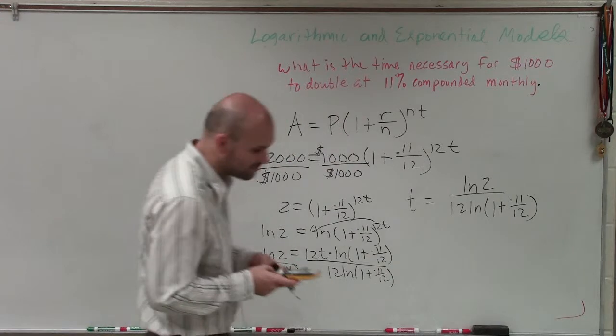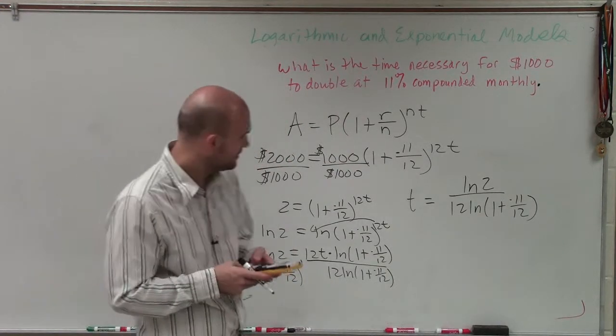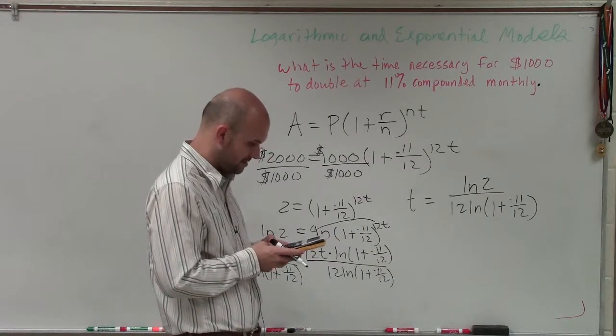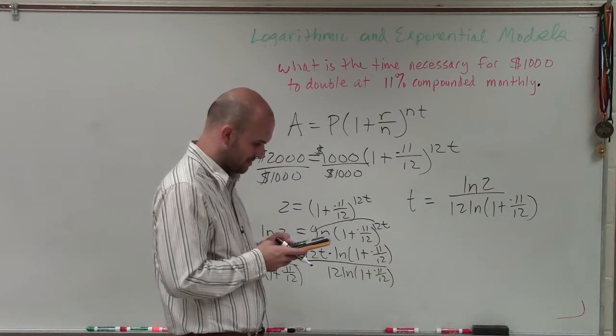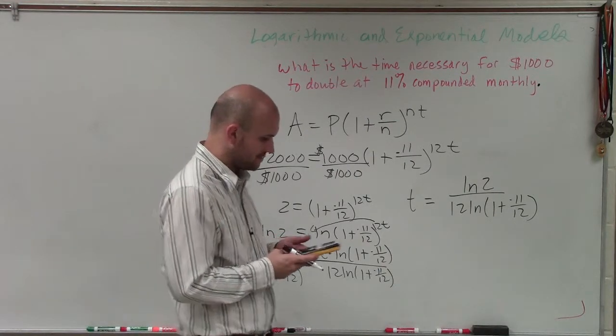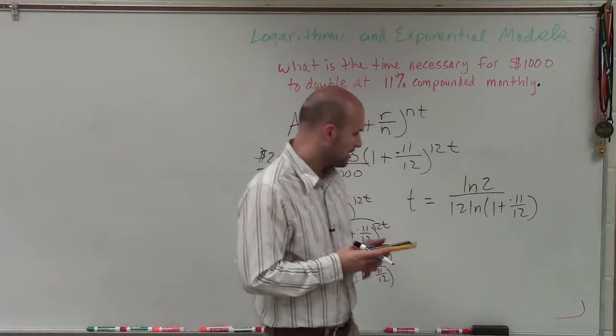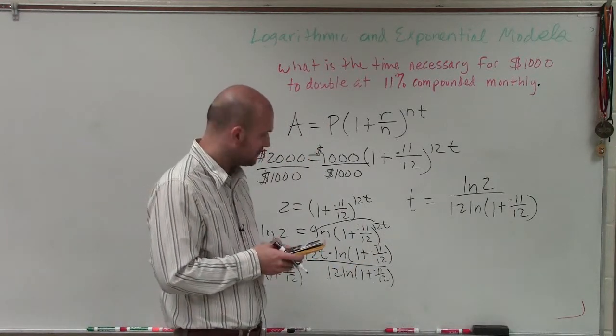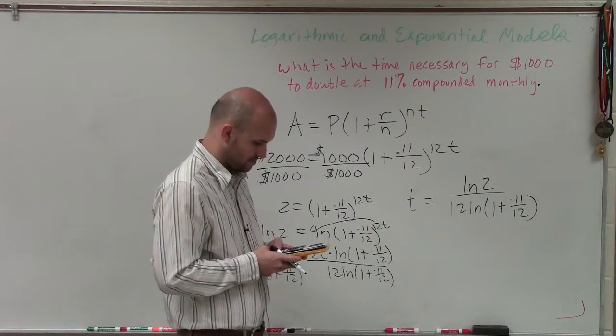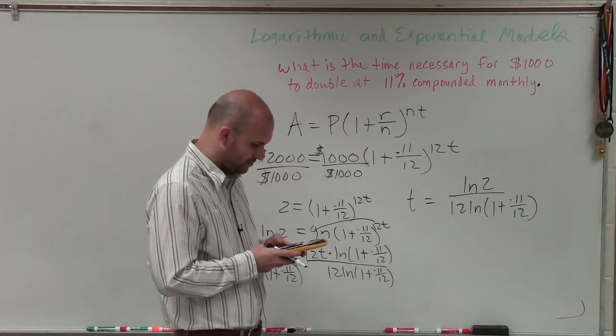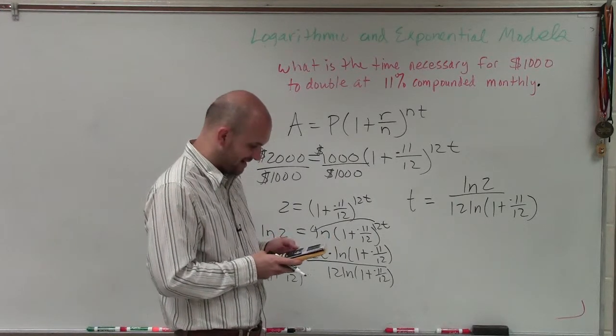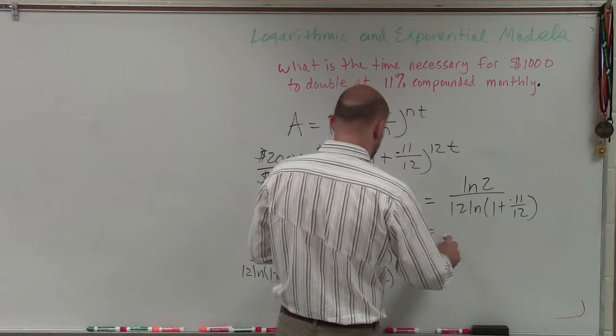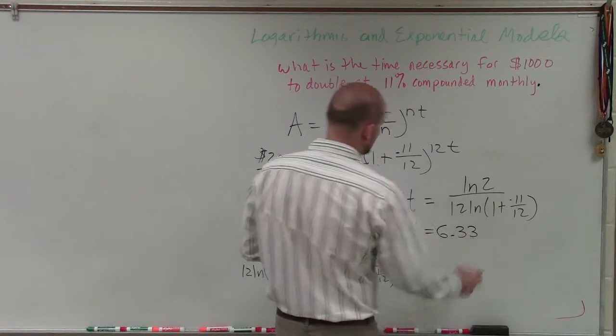So now let's go and compute this and see what we're going to get. So I have 0.11 divided by 12 plus 1. So now I'm taking the ln of 1 plus 0.11 divided by 12. And then I'm going to multiply that times 12. And then I'm going to take the ln of 2 and divide it by that answer. And I get t is going to equal 6.33 years.